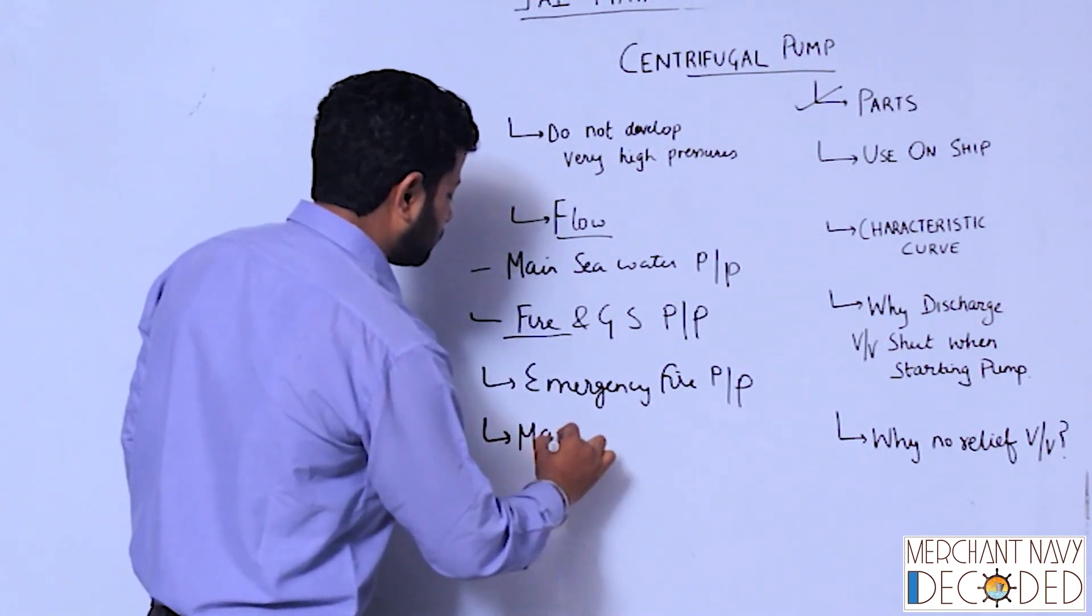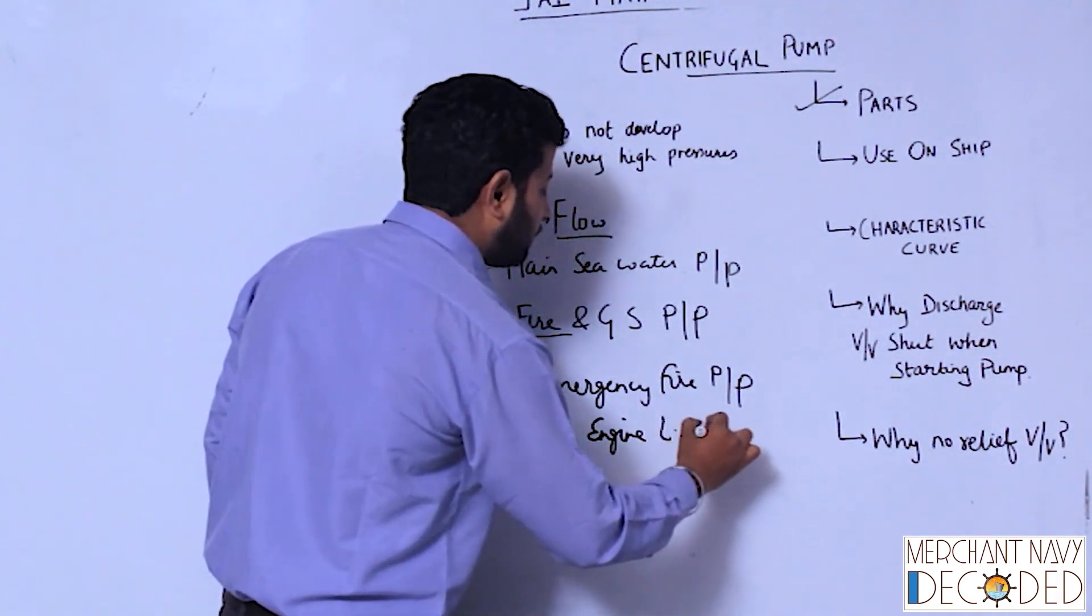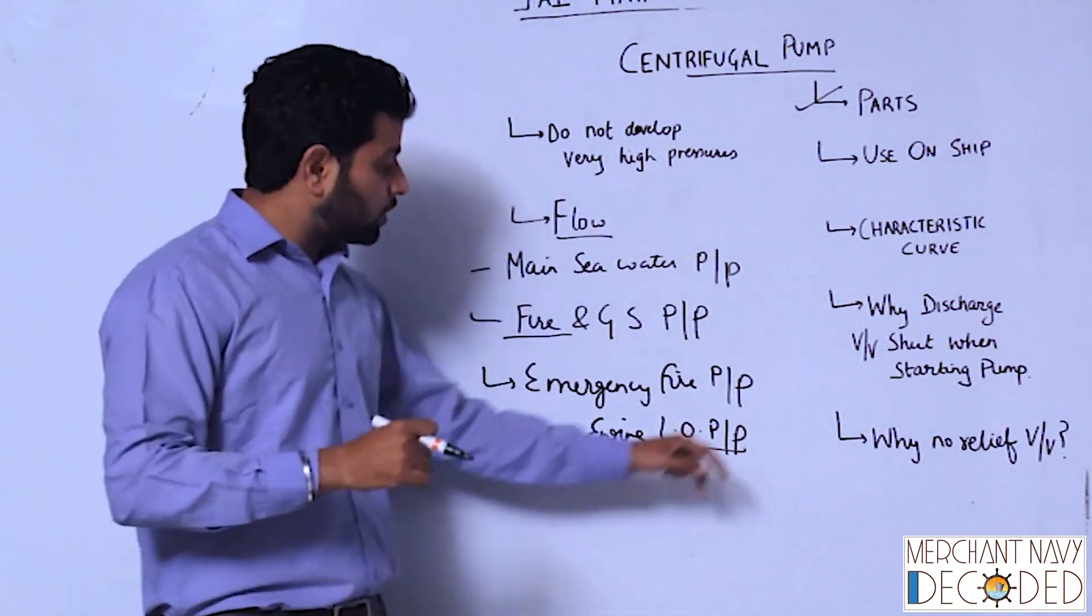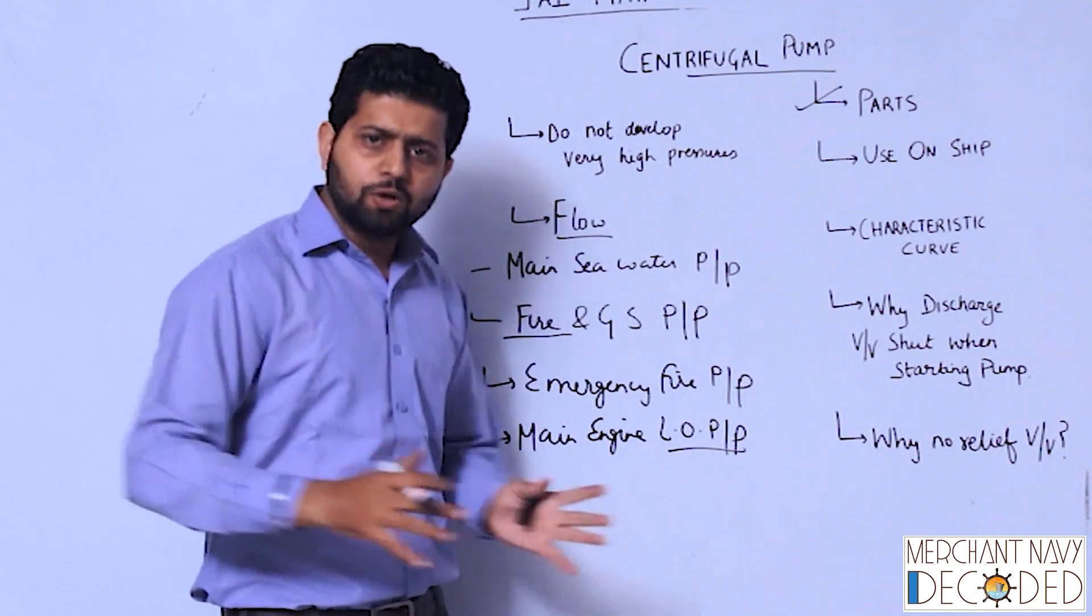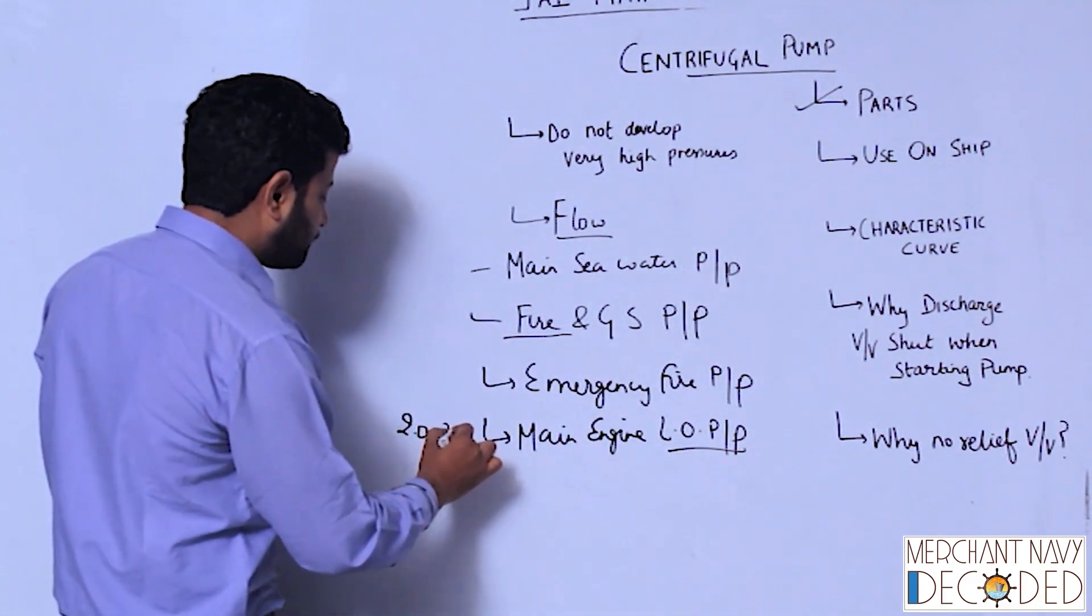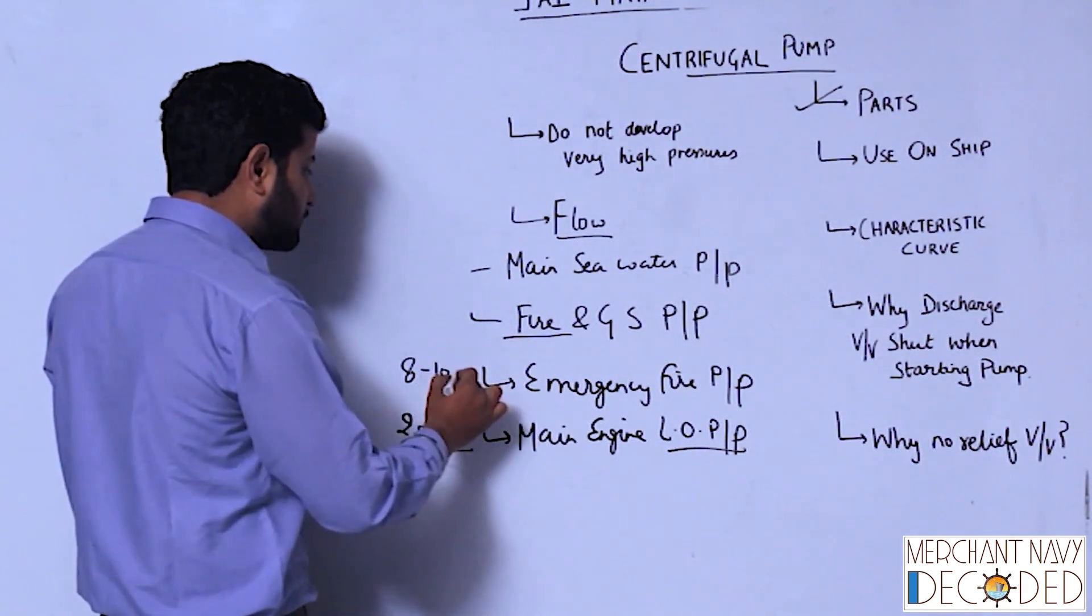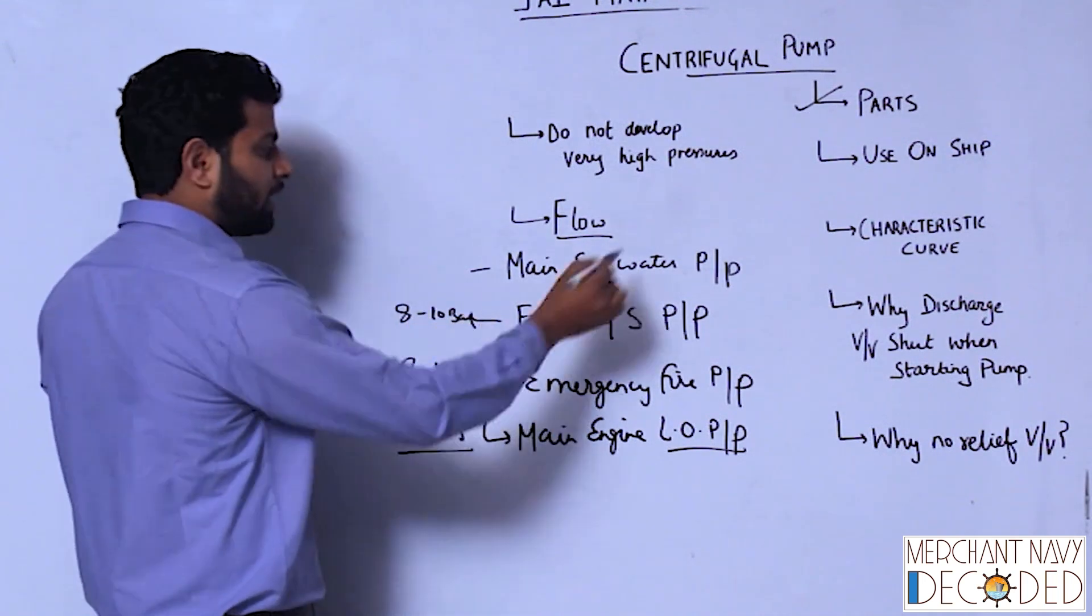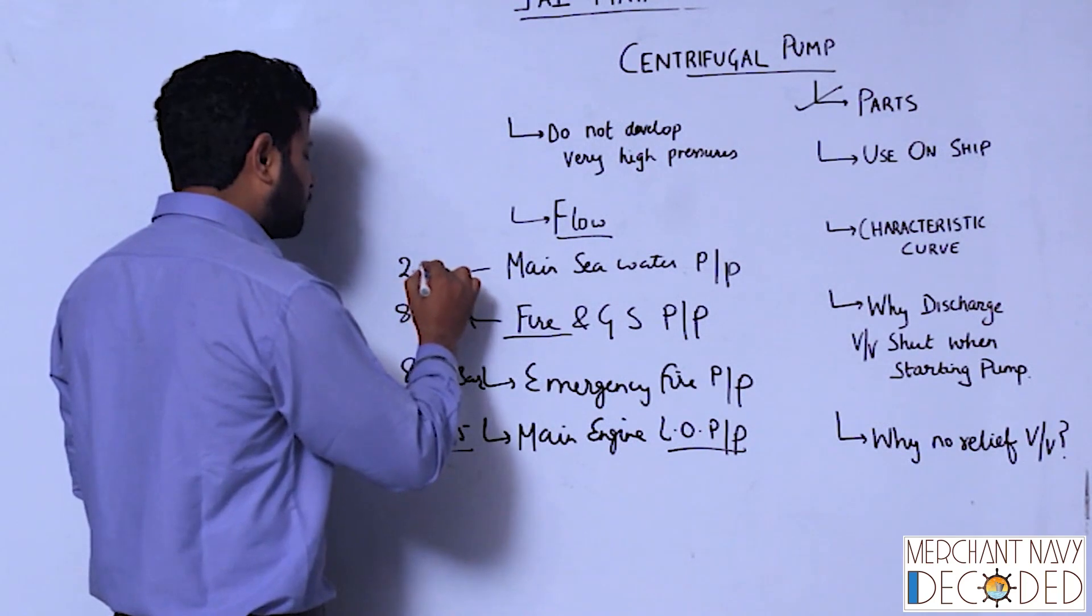Main engine lube oil pump, this is also a centrifugal pump because not enough pressure required, flow is required. Lube oil pump, pressure is 2 to 2.5 bar. Over here, emergency fire pump can go to 8 to 10 bars. Same goes for fire and GS pump, 8 to 10 bars. In main engine lube oil, we have a lot of flow but pressure not more than 2.5 to 3 bars.